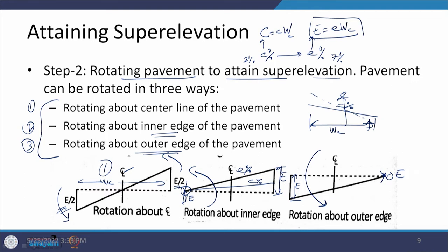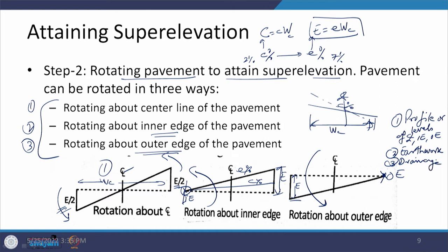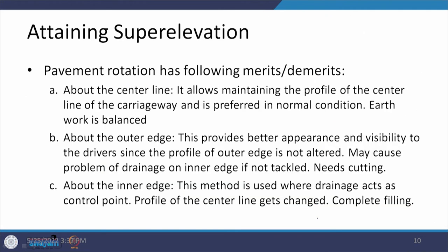Three things can be evaluated across these three methods: first, how the profiles or levels of the centerline, inner edge, and outer edge change; second, the earthwork requirement — whether cutting, filling, or both; and third, how drainage is affected at each location. If you superimpose these three elements on the three methods you get a clear picture of the merits and demerits of each approach.